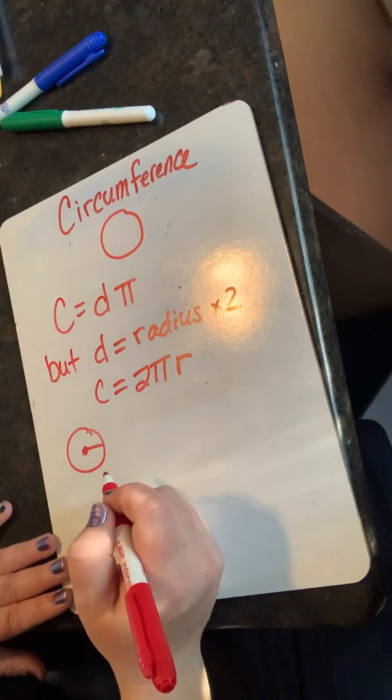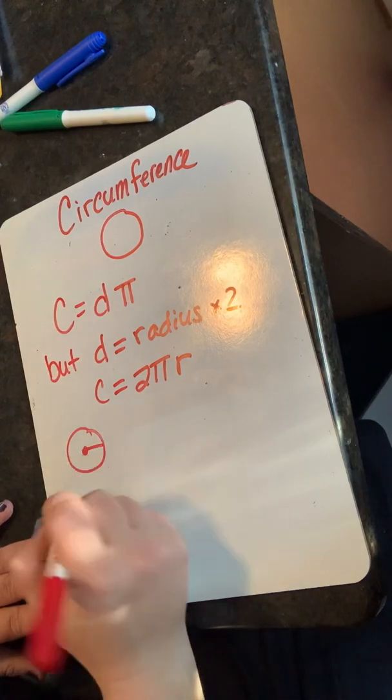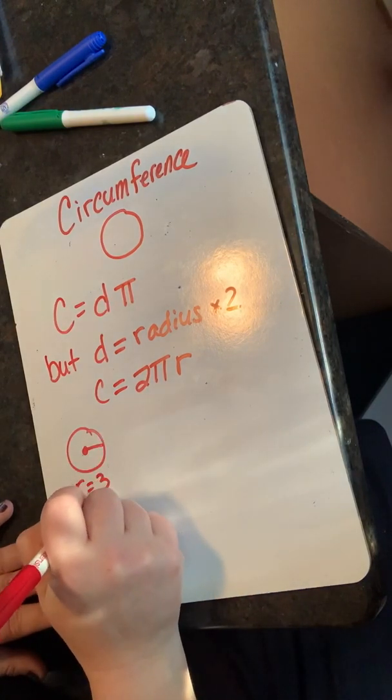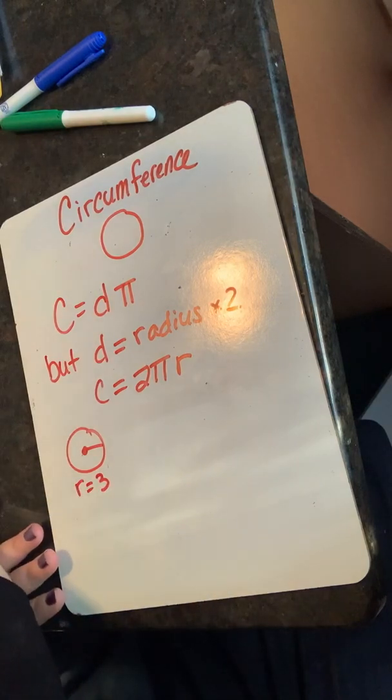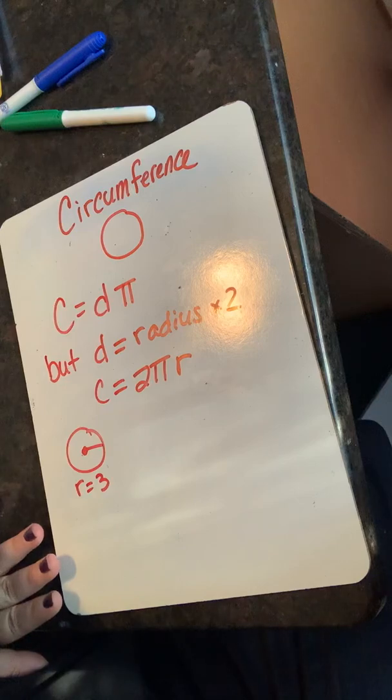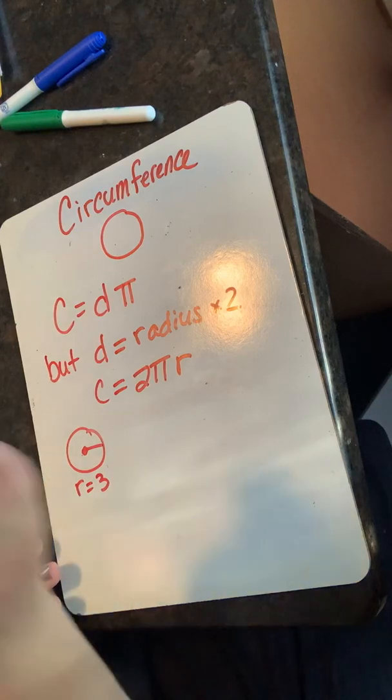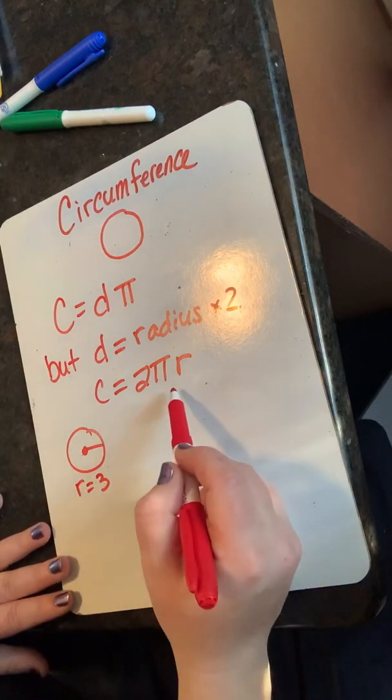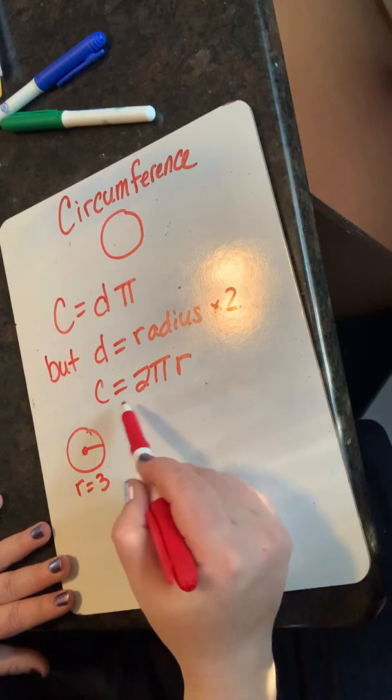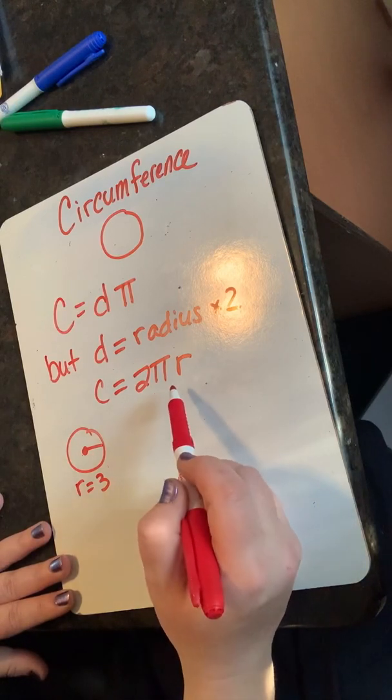We're going to find circumference of a circle that has a radius of three. Since I'm given radius, I'm going to use the equation circumference equals two times pi times radius.